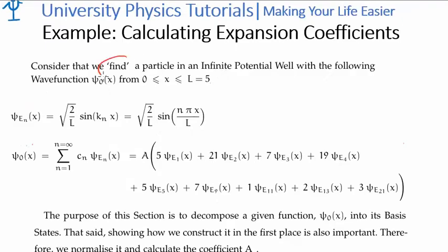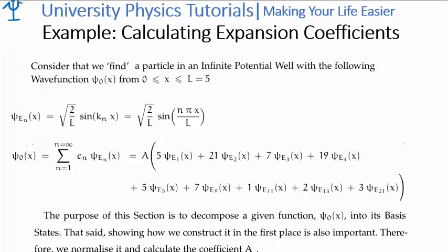Let's say we find a particle in an infinite potential well and we know its wave function. We know the wave function is given by psi sub zero of x, and this is simply a linear combination of the basis wave functions psi sub e sub n. In this case I'm taking five times the n=1 wave function, 21 times the n=2 wave function, and so on. The purpose of this section is to decompose the given function psi sub zero into its basis states.